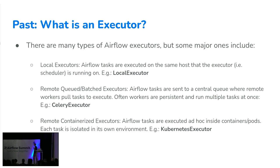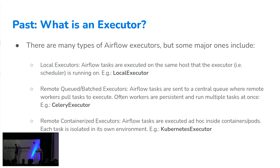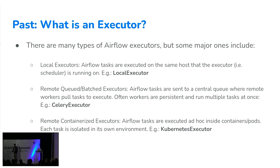The third type is a containerized remote executor — Kubernetes is the main example. Tasks are executed inside containers or pods ad hoc: the scheduler decides a task should run, hands it to the executor, the executor starts a pod, runs the task, and tears the container down after the task exits. Benefits include no noisy neighbor problem since each task has its own CPU and memory, and you can customize the environment with specific system libraries, binaries, and data. It's cost effective since compute only lives for the task duration. Downsides include startup latency per container and the overhead of managing a Kubernetes cluster.